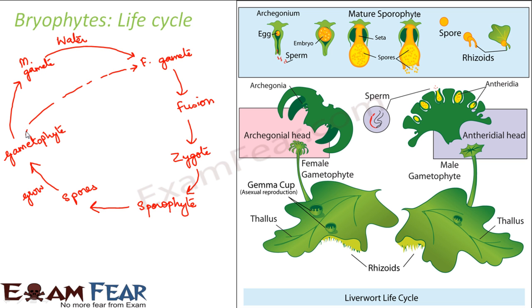Looking at the male and female structures on the plant, you can see they look like umbrellas on the plant — the female part as well as the male part both look like umbrellas. Water, such as rain, provides the medium through which male gametes are carried to the female gametes. The female gametophyte doesn't carry gametes visibly, but the male part — viewed closely — reveals the antheridia, which contain the sperms. Sperms are nothing but the male gametes.